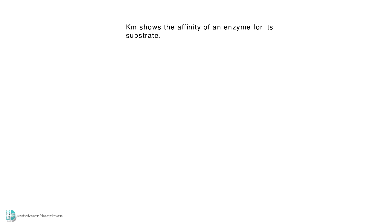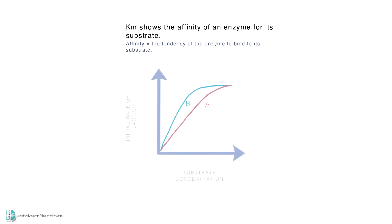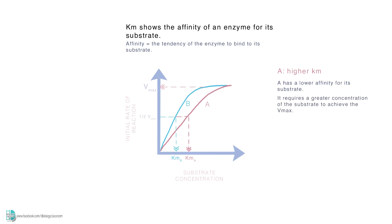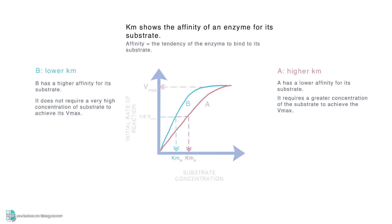Km shows the affinity of an enzyme for its substrate. Affinity is the tendency of the enzyme to bind to its substrate. Here in this graph, we have two enzymes with the same Vmax but different Km. A has a higher Km compared to B. An enzyme with a higher Km has a lower affinity for its substrate — it requires a greater concentration of the substrate to achieve Vmax. On the other hand, an enzyme with a lower Km has a higher affinity for its substrate, which means that it does not require a very high concentration of the substrate to achieve its Vmax.